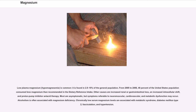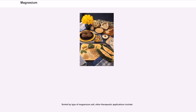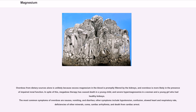Chronically low serum magnesium levels are associated with metabolic syndrome, diabetes mellitus type 2, fasciculation, and hypertension. Overdose from dietary sources alone is unlikely because excess magnesium in the blood is promptly filtered by the kidneys, and overdose is more likely in the presence of impaired renal function. However, megadose therapy has caused death in a young child, and severe hypermagnesemia in a woman and a young girl who had healthy kidneys. The most common symptoms of overdose are nausea, vomiting, and diarrhea. Other symptoms include hypotension, confusion, slowed heart and respiratory rate, deficiencies of other minerals, coma, cardiac arrhythmia, and death from cardiac arrest.